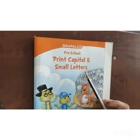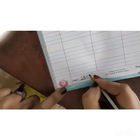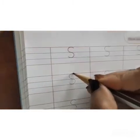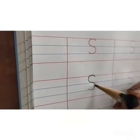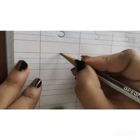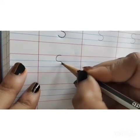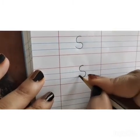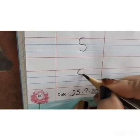This is your small workbook children — print capital and small letter book. Open to page number 16. Write the date 25-9-20. Now let's write capital S. Red line to blue line, curve line. Blue line to blue line, curve line — capital S. In this way you will write capital S.